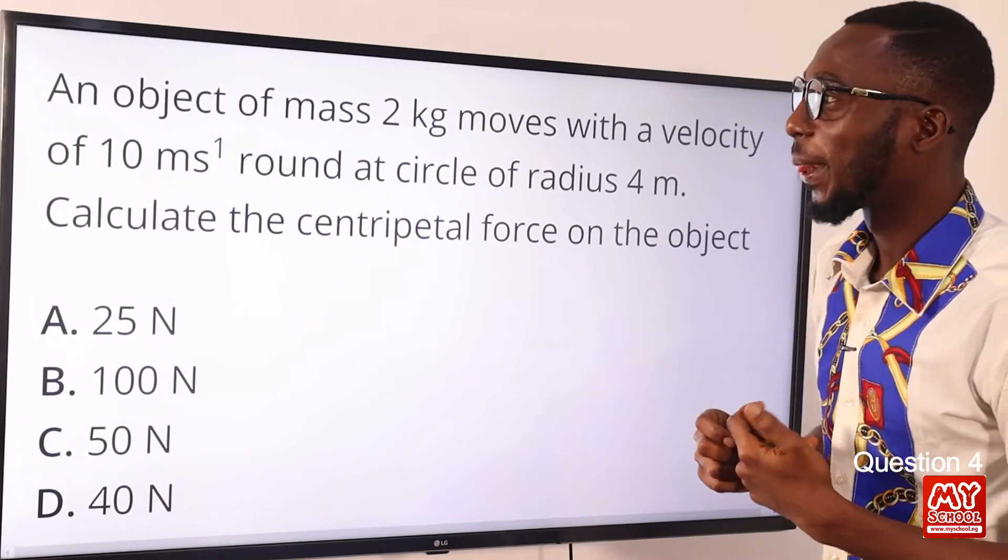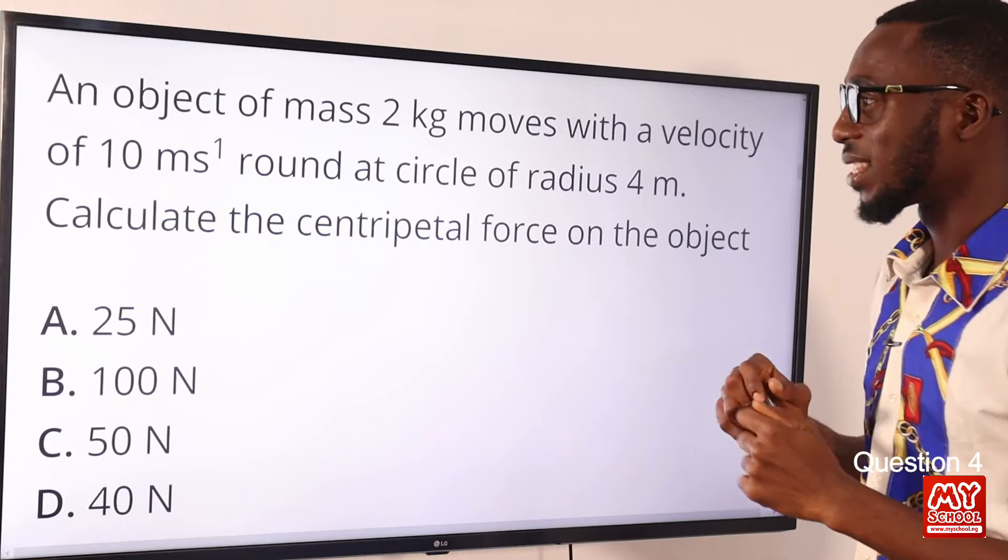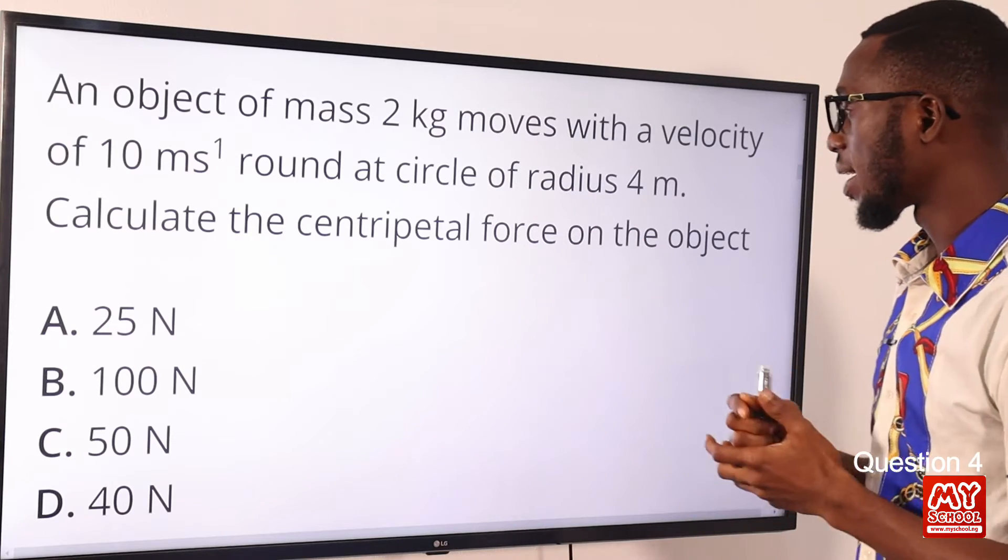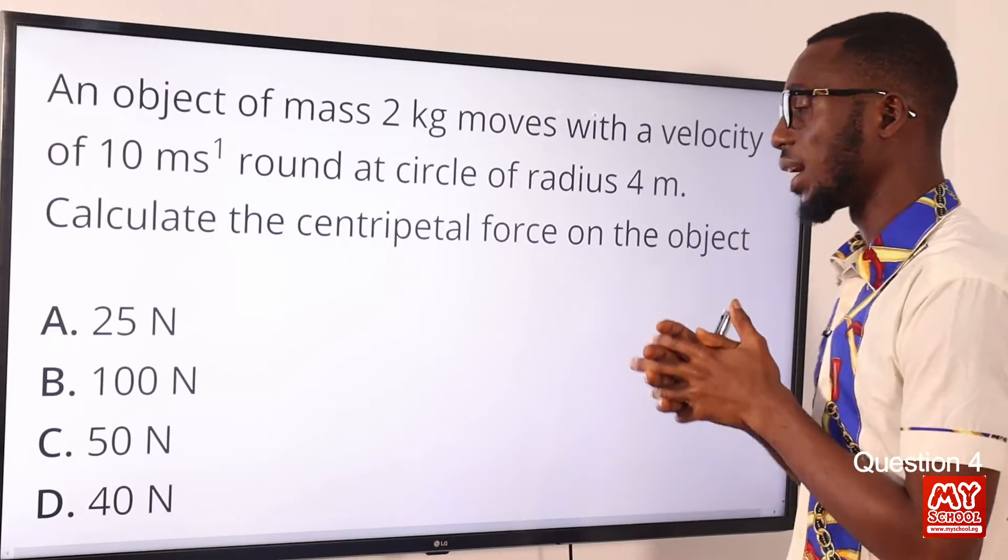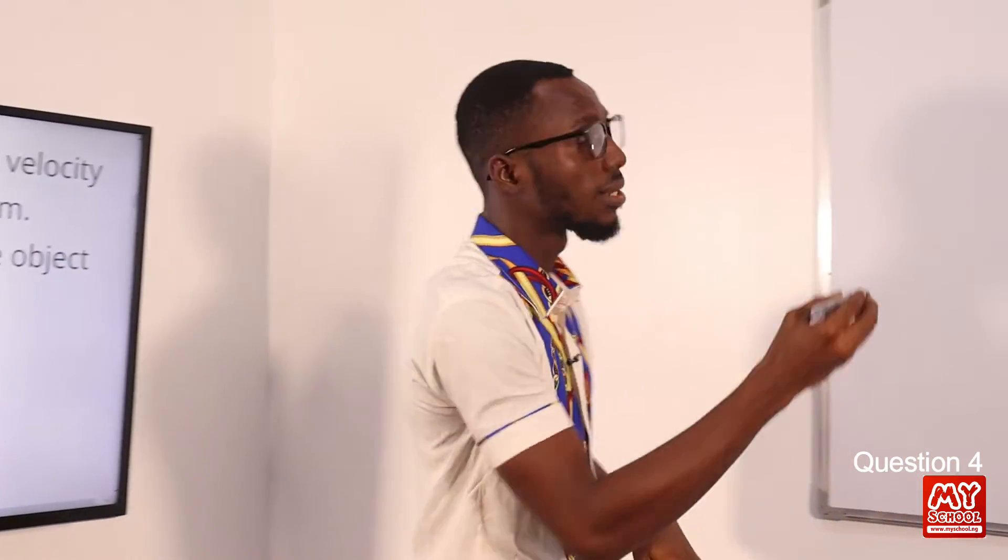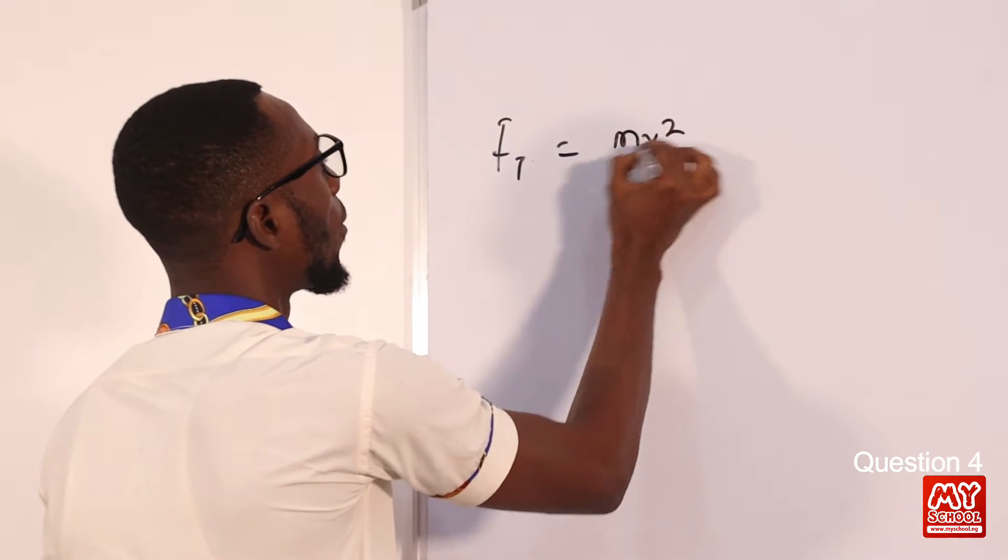Question 4. An object of mass 2 kg moves with a velocity of 10 meters per second around a circle of radius 4 meters. Calculate the centripetal force on the object. So remember that centripetal force we can use Fc to represent it. So we have this equals mv squared over r.